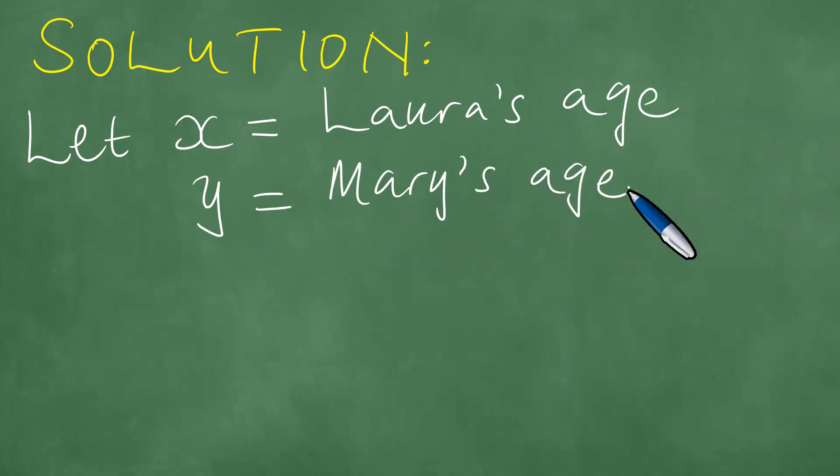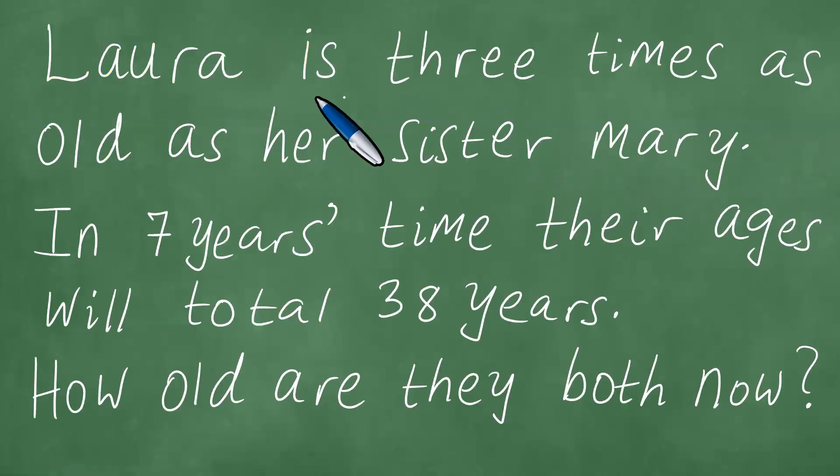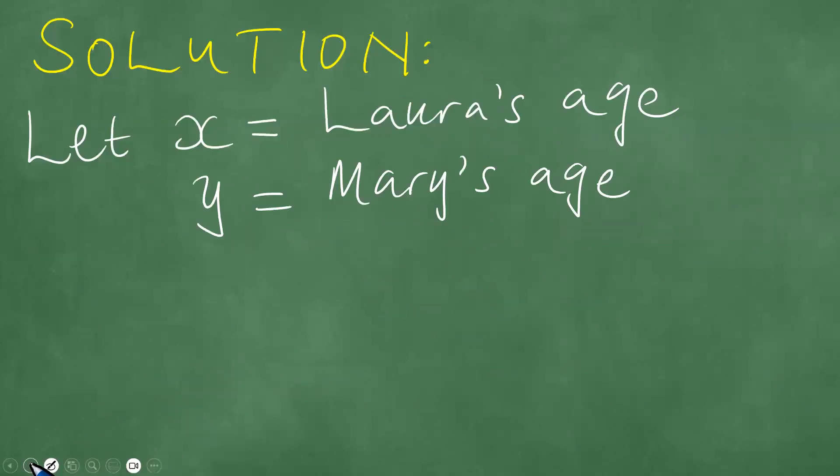Now we are told in this part of the problem that Laura is three times as old as her sister Mary. So we have Laura and then we have Mary. But if Laura is already three times as old as Mary, it therefore means that we're going to have to multiply Mary's age by three and equate the two, like so.